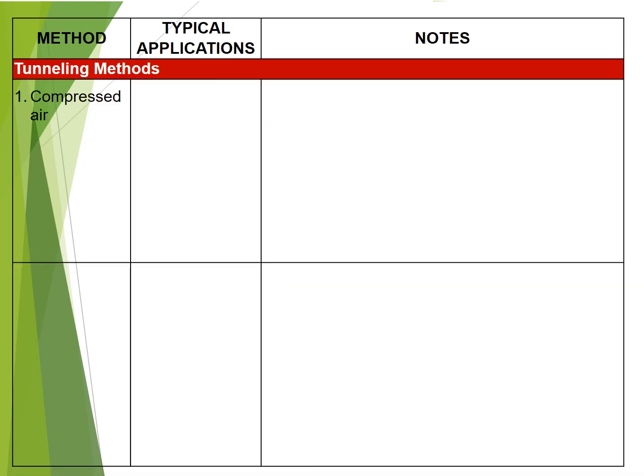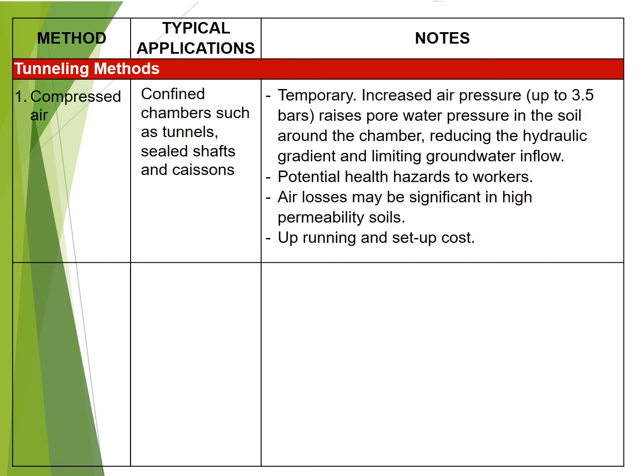Tunneling methods. 1. Compressed air: used in confined chambers such as tunnels, sealed shafts and caissons. Temporary. Increased air pressure, up to 3.5 bars, raises pore water pressure in the soil around the chamber, reducing the hydraulic gradient and limiting groundwater inflow. Potential health hazards to workers. Air losses may be significant in high permeability soils. Running and setup costs are high.